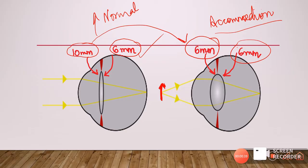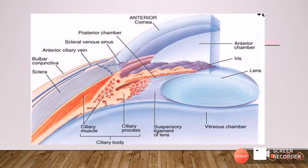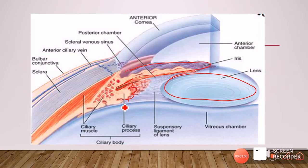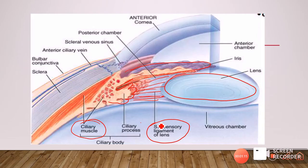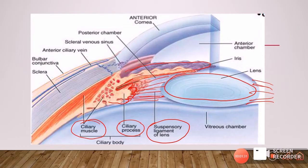Only the anterior surface undergoes a change in radius of curvature; the posterior curvature of the lens remains the same at 6 millimeters, both in the normal unaccommodated state and in the accommodated state. Before explaining how accommodation takes place, it is important to know the basic anatomy of the lens. The lens is situated behind the iris. Behind the iris we have the ciliary body, which contains an important muscle called the ciliary muscle. The ciliary body is connected to the equator of the lens using fine fiber-like structures called the suspensory ligaments of the lens.